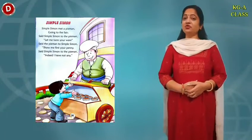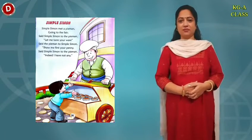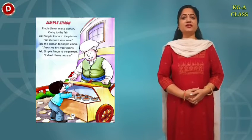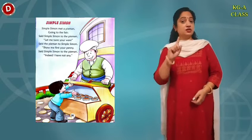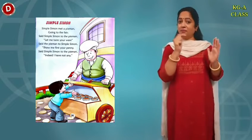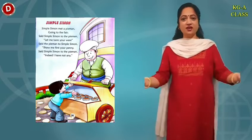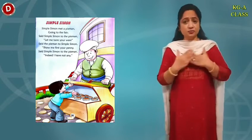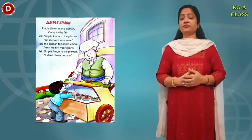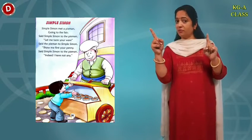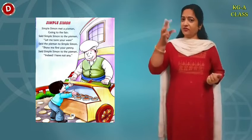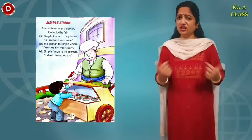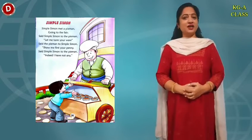Children, now it's time to practice our new rhyme, which is Simple Simon, with actions. Good morning. The title of my poem is Simple Simon. Simple Simon met a pieman, going to the fair. Said Simple Simon to the pieman, let me taste your ware. Said the pieman to Simple Simon, show me first your penny. Said Simple Simon to the pieman, indeed I have not any. Thank you.